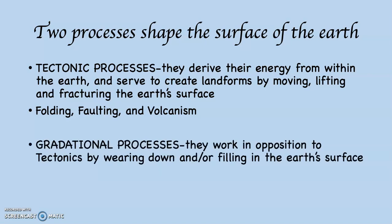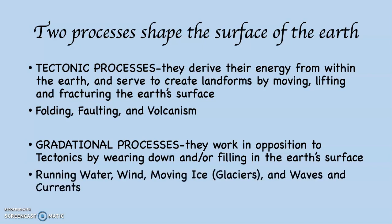Then there are the gradational processes. These work in opposition to tectonics by wearing down and/or filling in the landscape. There are four gradational agents: running water, wind, moving ice — which is glaciers — and waves and currents. You can see three of the four have to do with water. This third section of the class will be focused on the tectonic processes. The fourth section of the class focuses on the gradational processes.